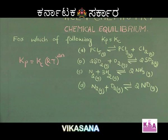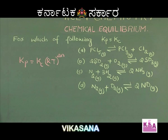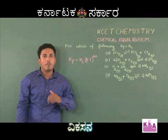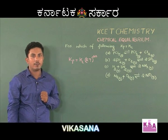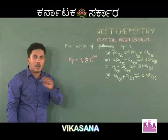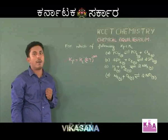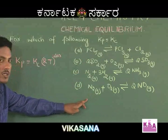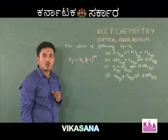Where Kp is the equilibrium constant in terms of partial pressure, R is the gas constant, T is the temperature, and ΔN is the number of moles of gaseous products minus the number of moles of gaseous reactants. Kp will be equal to Kc if ΔN equals 0. Hence, we need to find ΔN for all reactions and identify for which one ΔN equals 0.